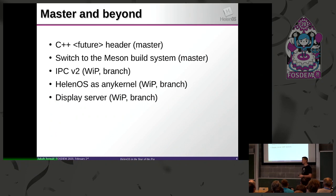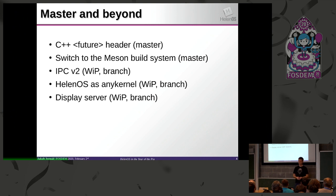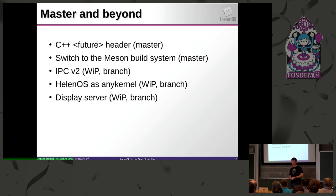What things made it to the HelenOS master and other branches? We already mentioned the C++ future header, hacked on during the SUSE hack week, that's already merged. Then there was a really big feature merged into master: the switch of the build system from the old make to the Mazon build system, which finally gave us the capability to do proper out-of-tree builds. We are still recovering from the effects of this switch, especially in our infrastructure and testing setups. That's also the reason why there was only one release last year, because a showstopper blocker prevented a second release. Besides that, I worked on the IPC version 2 branch.